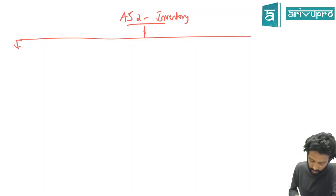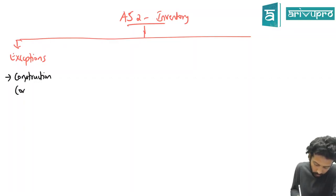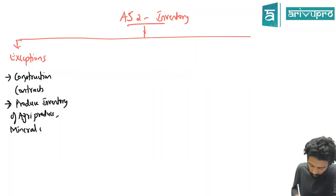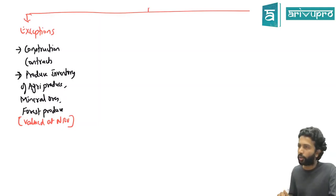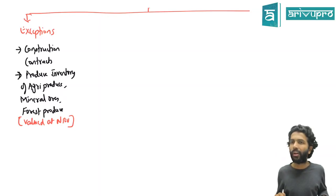We're doing a chart for AS2 inventory valuation. We can refer our handout and keep doing. First what did we learn? Exceptions, right. AS2 is not applicable for few things. Exceptions is what? It's not applicable for construction contracts, and then the main important was producers' inventory of agricultural produce, mineral ores, forest produce, etc. This is your exception. AS2 is not applicable because all this, except for exceptions, they value it at NRV.